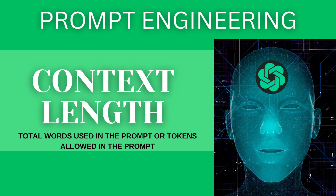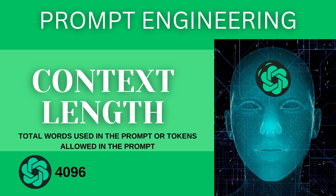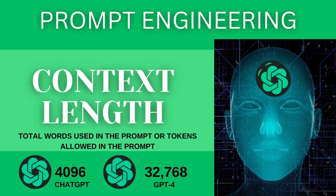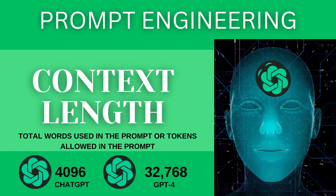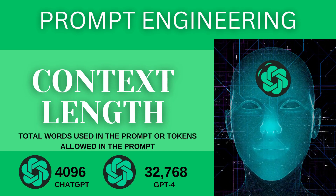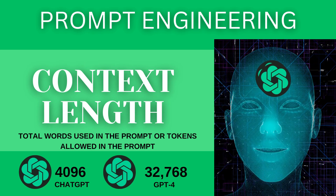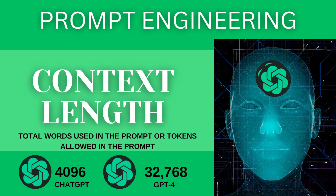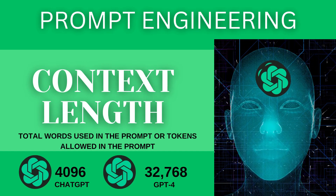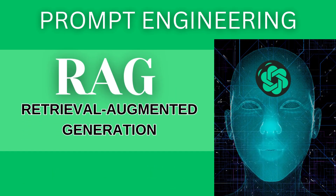Context length is actually how long your context or prompt can be. As you know, ChatGPT's context length is 4,096 tokens. In ChatGPT-4, the context length is 32,768 tokens. In simple language, it is just how many words you can enter in the prompt. Context length is very important for your large language model. You can also use large language model training because large language models are trained on a technique called Retrieval Augmented Generation.